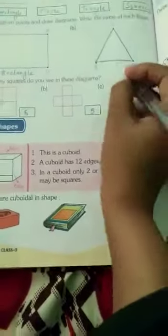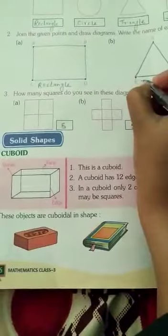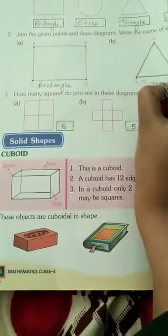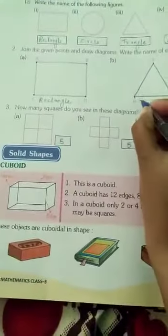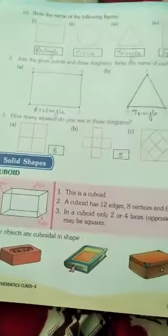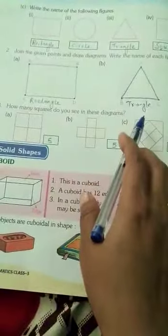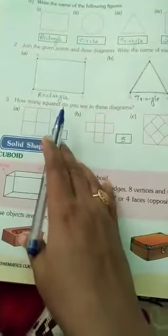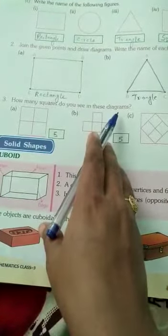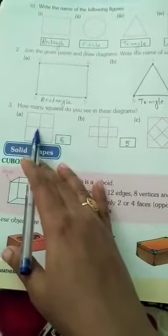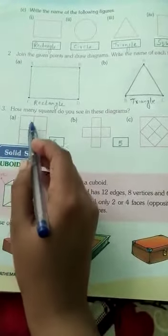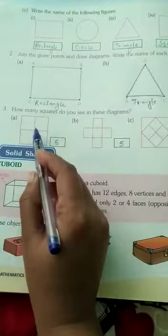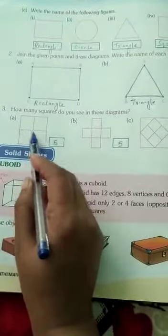Question three: how many squares do you see in these diagrams? This is one, this is one, this is one square, this is two square, this is three square, this is four, and one big square. So how many? Five squares in this figure.